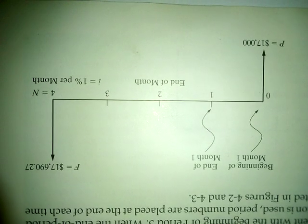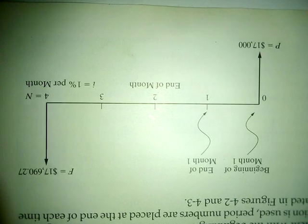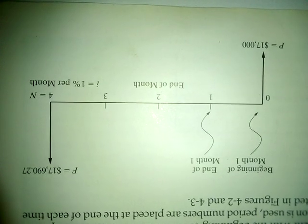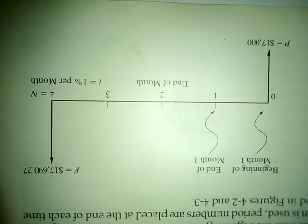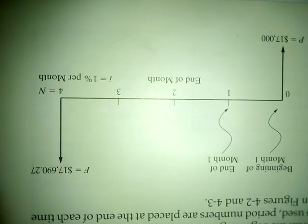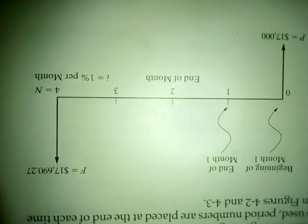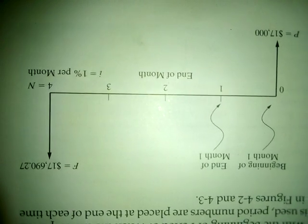P is below the zero line on the diagram. Since we are spending the money, we plot the seventeen thousand downward on the diagram. Since we are receiving money after four years, we plot f upward above the zero line. You can see the number of years along the axis.